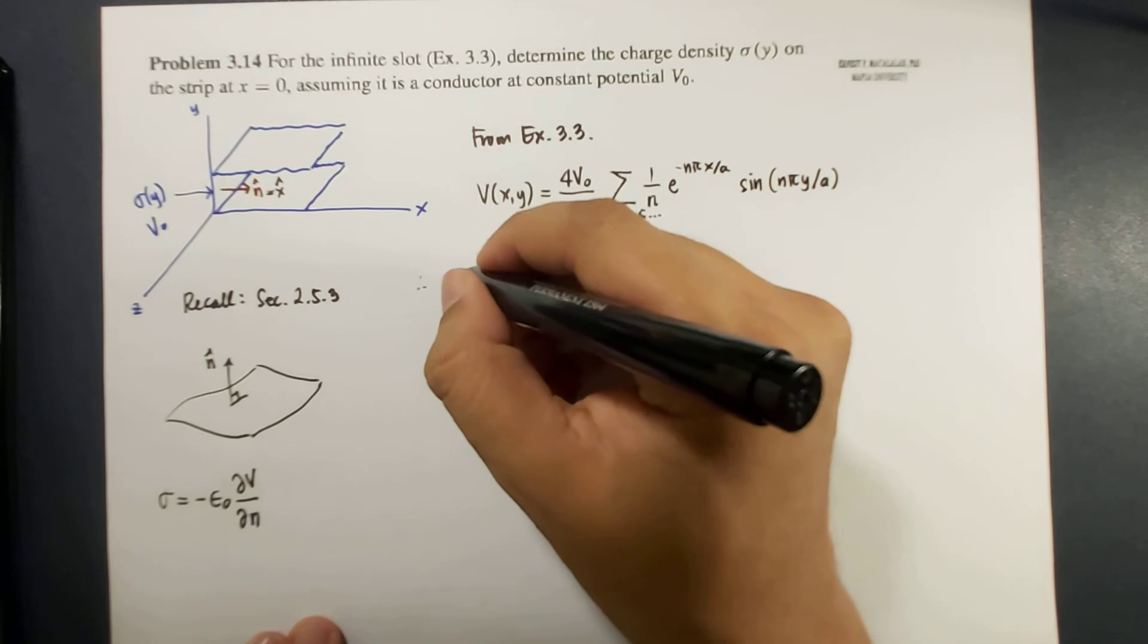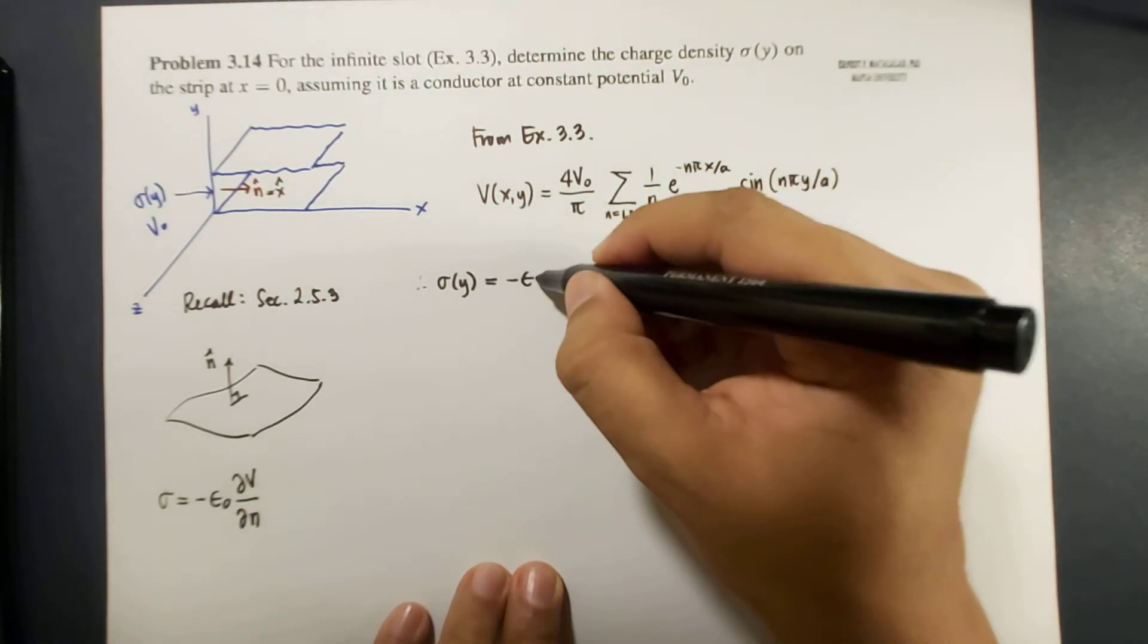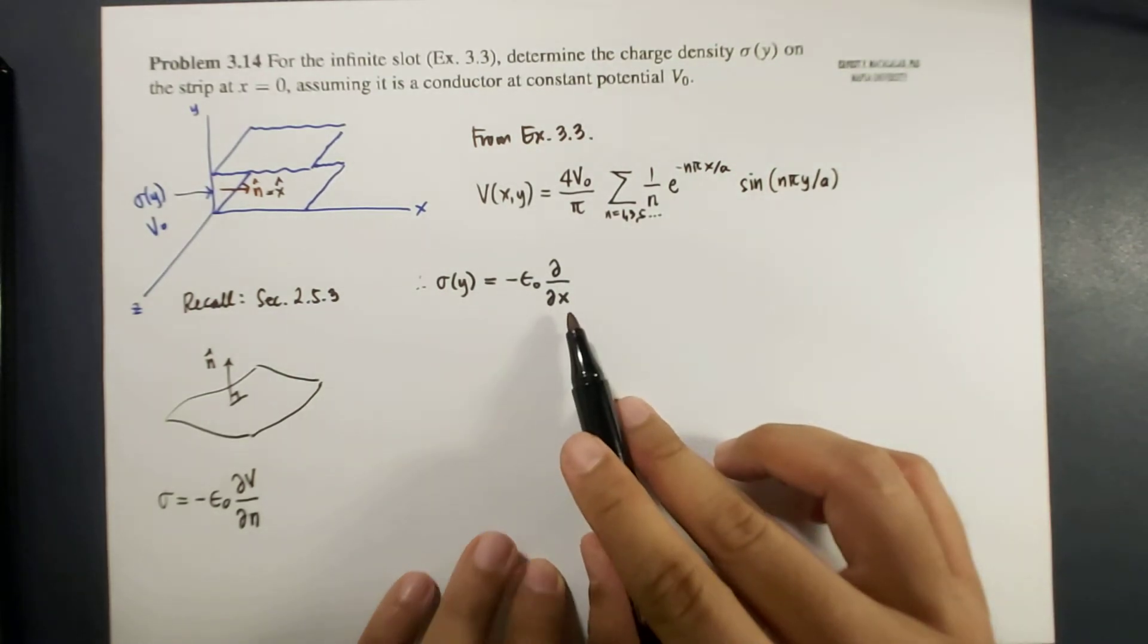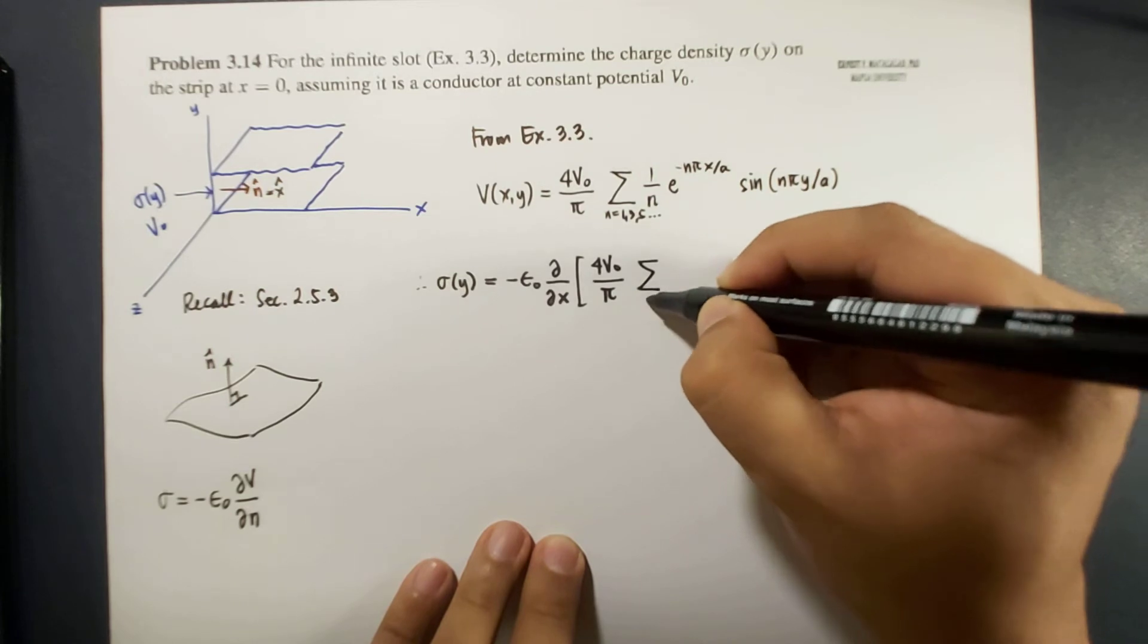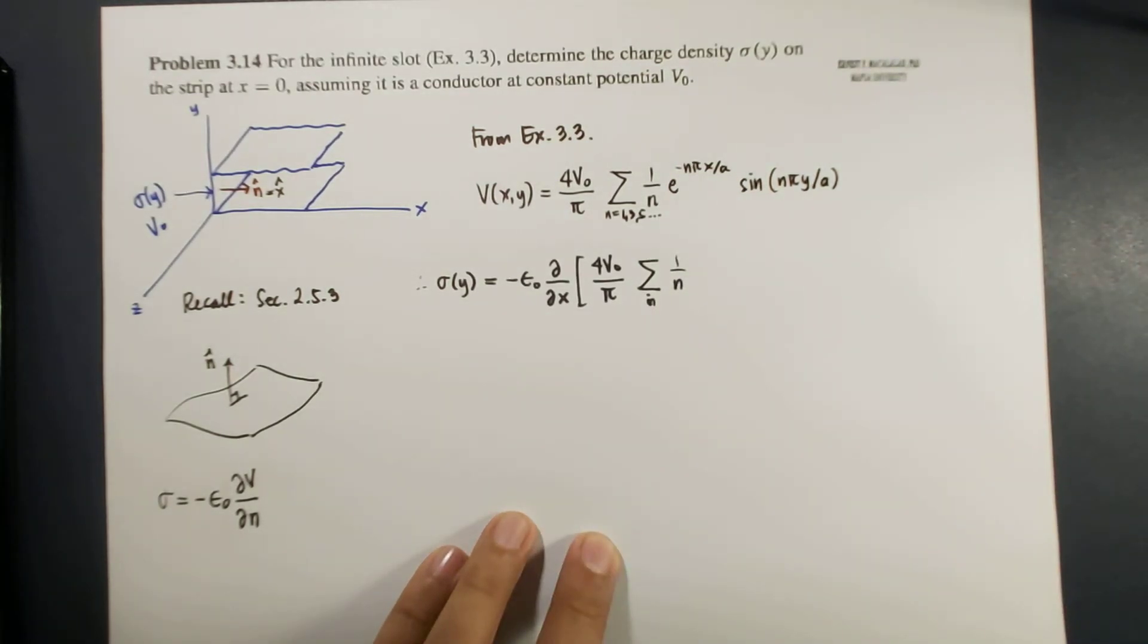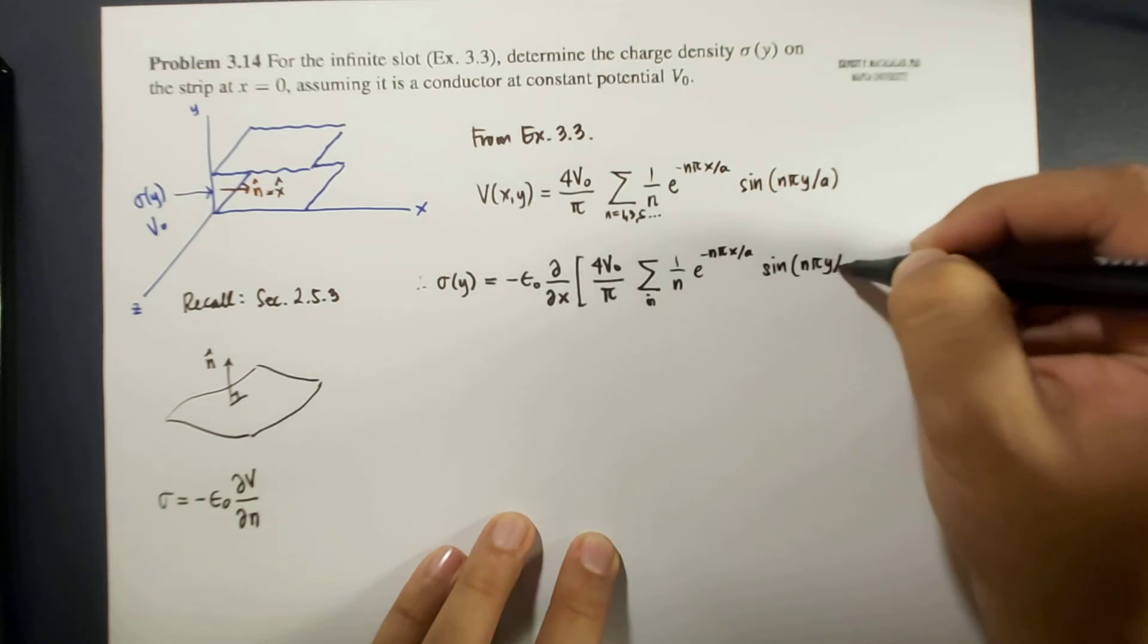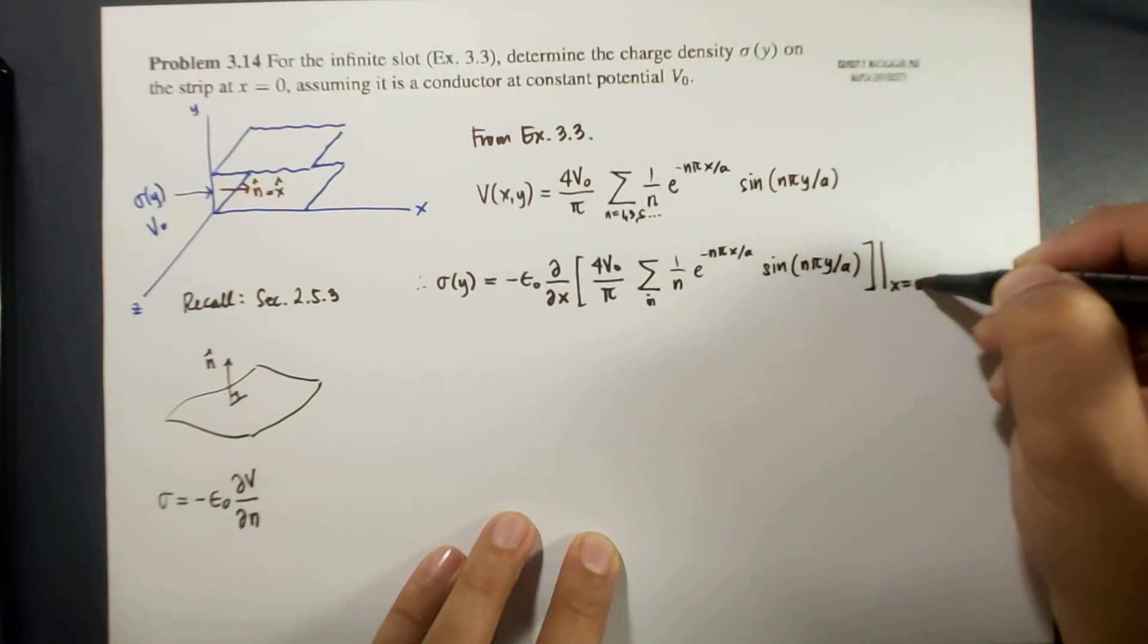Okay, so sigma is equal to negative epsilon naught times the partial derivative with respect to x of 4V0 over pi times the sum for all odd n, 1 over n, e to the negative n pi x over a sine n pi y over a. And we're going to evaluate it at x equals 0.